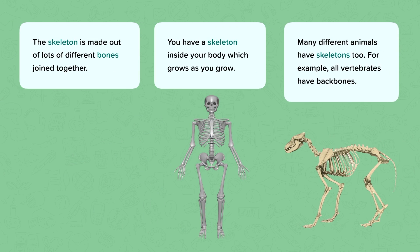You should remember that vertebrates are animals that have a backbone or a spine. Here we have a skeleton of a dog. It looks slightly different to a human skeleton, but because we're both mammals there are similarities too.